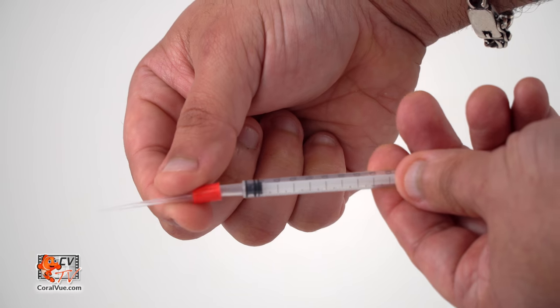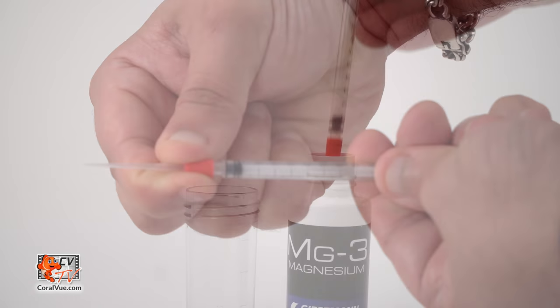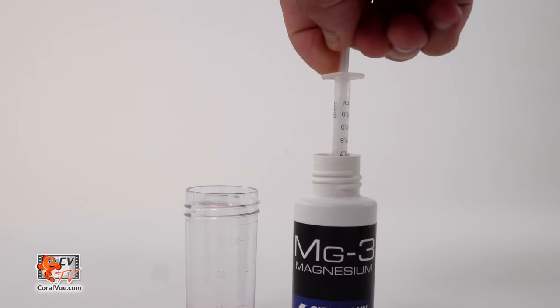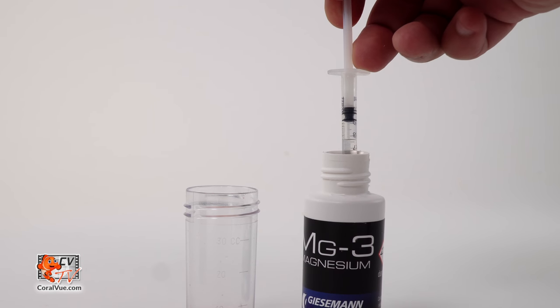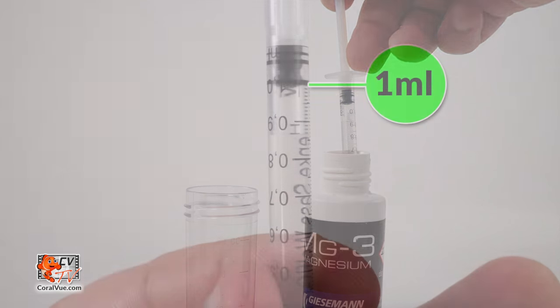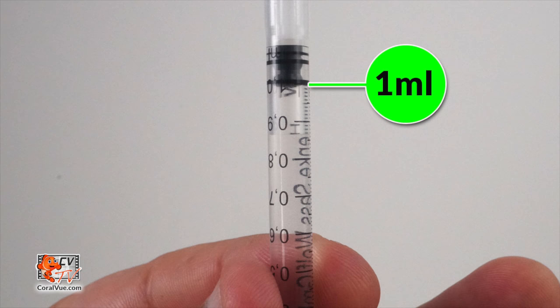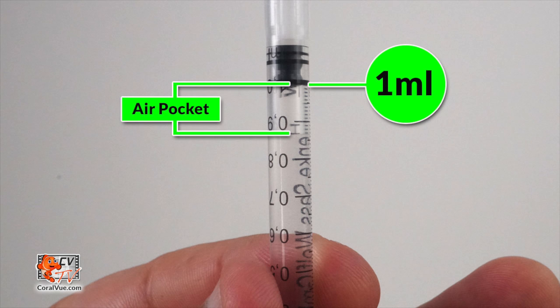Mount the plastic tip onto the 1 milliliter syringe. Fill the syringe with 1 milliliter of MG3 test fluid. Be sure to keep the tip of the syringe fully submerged when drawing the reagent and stop when the lower edge of the black piston reaches the 1 milliliter mark. There will be some air present right below the piston. This is normal. It will not affect the results.